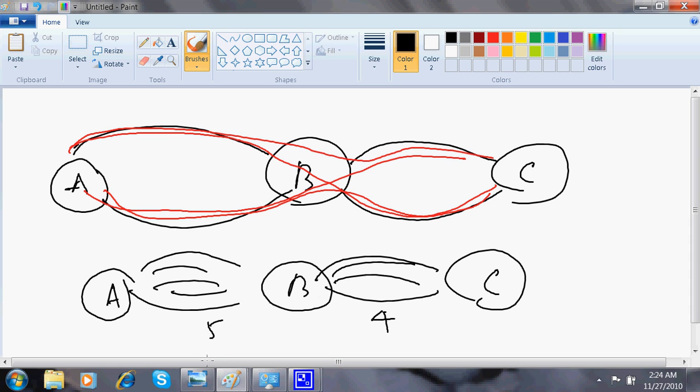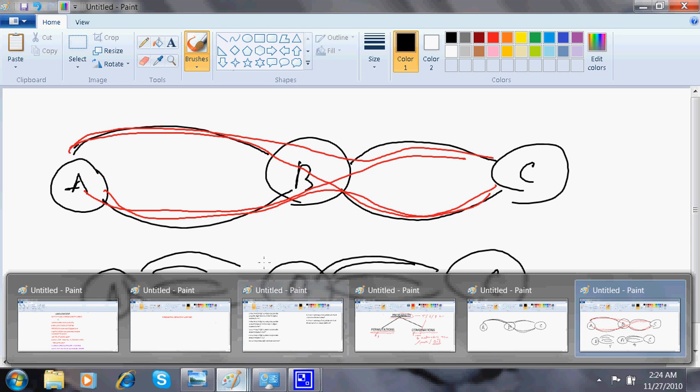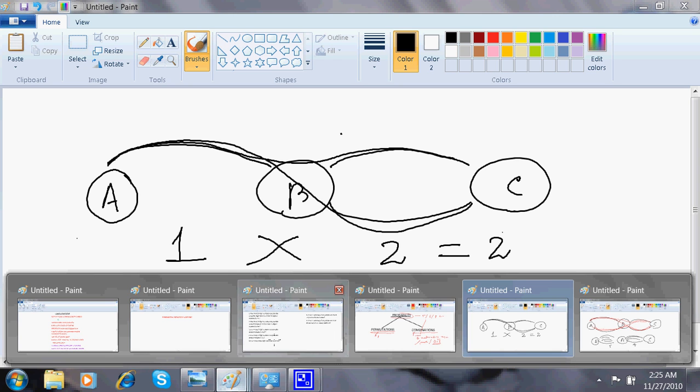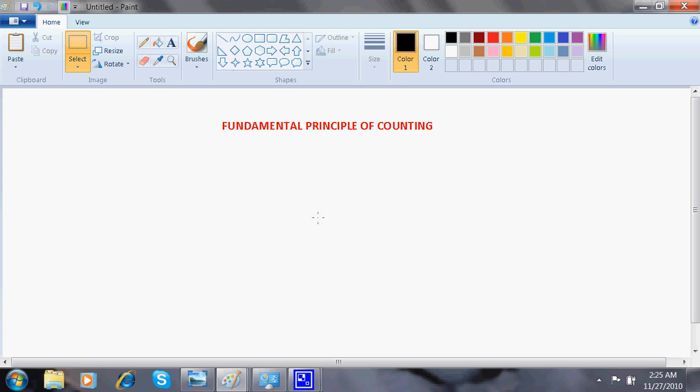Normal counting we can do. But there comes permutations. What exactly is mathematically true is, there is a single way from A to B. There are two ways from B to C. We just multiply this. One into two is two. This is called fundamental principle of counting.